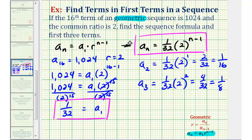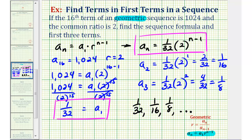So again, here's the formula for our sequence. The first three terms would be one over 32, one over 16, and one over eight. Of course, the sequence would continue, but this is what the question asked for.